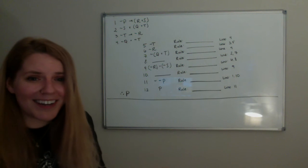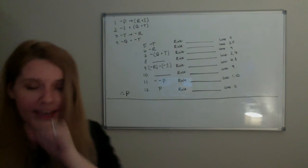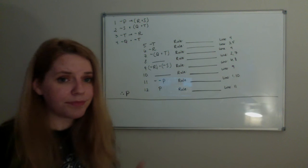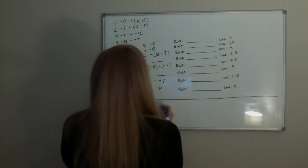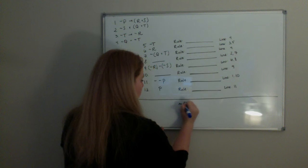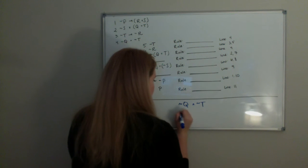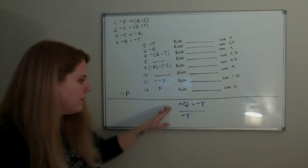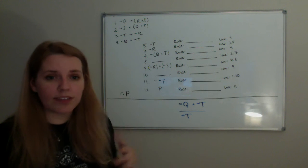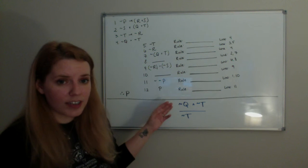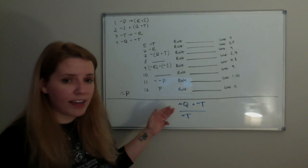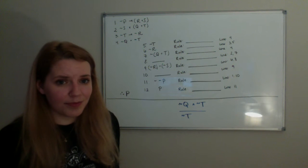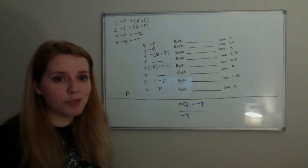In line 5, we have not T, and our line citation is just line 4. Line 4 gives us not Q and not T, and we're saying that somehow we can derive not T from this alone. What rule gives us a conjunction claim and tells us that from any conjunction claim, you can assert one of its conjuncts by itself? That's the rule simplification.